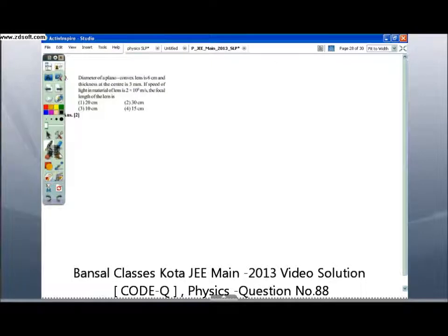Question number 88. Diameter of a plano-convex lens is 6 cm and thickness at the center is 3 mm. Speed of light in the material of the lens is given. The focal length of the lens: First, we have mu equals c by v, which equals 3 by 2.